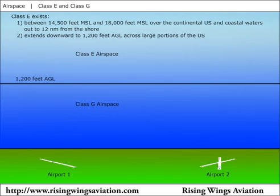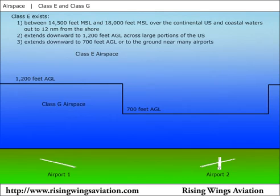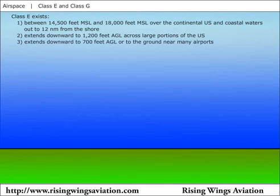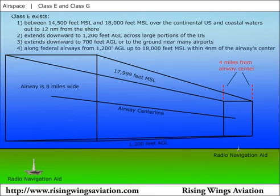In order to protect instrument traffic conducting approaches in marginal weather conditions, Class E airspace is often further extended down to 700 feet AGL or even all the way to the surface. These 700 feet AGL or surface areas are usually customized to encompass portions of specific instrument approaches at an airport and are depicted on aeronautical charts.